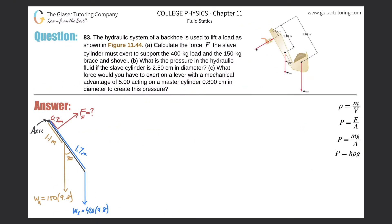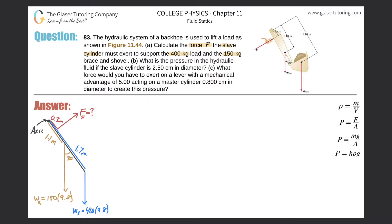Problem 83: the hydraulic system of a backhoe is used to lift a load, as shown in figure 11.44. Part a — calculate the force the slave cylinder must exert to support the 400 kilogram load and the 150 kilogram brace and shovel. The picture is shown above, but I've redrawn it to make it a little neater.